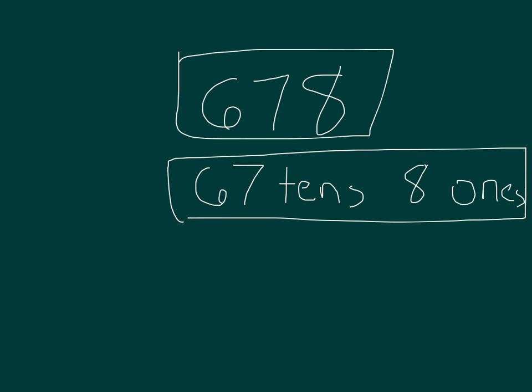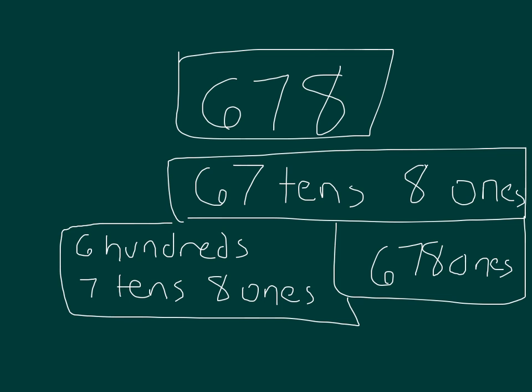I also could just break it up and then break it down further there. I could break it up into 678 ones if I really wanted to. There's so many different ways I could break apart that number, or decompose it. And there's yet another way: 600, 7 tens, 8 ones. I could break that apart and write the number in its unit form.